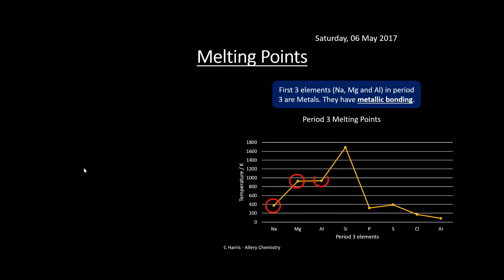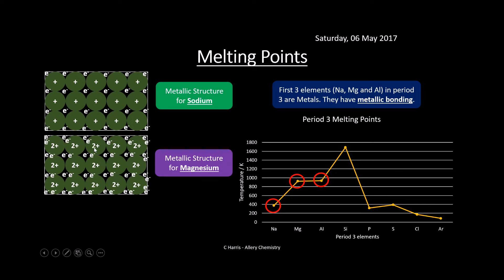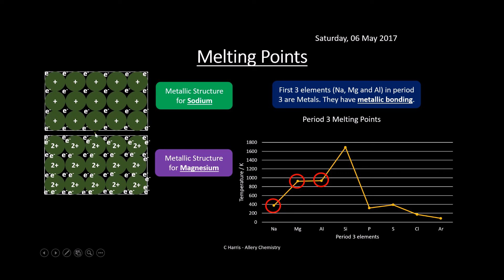Now, melting points. The first three elements in period three — sodium, magnesium, and aluminium — are metals, so they all have metallic bonding. Sodium has a positive metal ion with surrounding electrons. Magnesium has a 2+ charge and two electrons, giving a much bigger electrostatic attractive force between the 2+ ion and the negative electrons. There is a general increase in melting points as the metal ions have an increased positive charge and more delocalized electrons, resulting in a stronger metallic bond and increased electrostatic attraction.